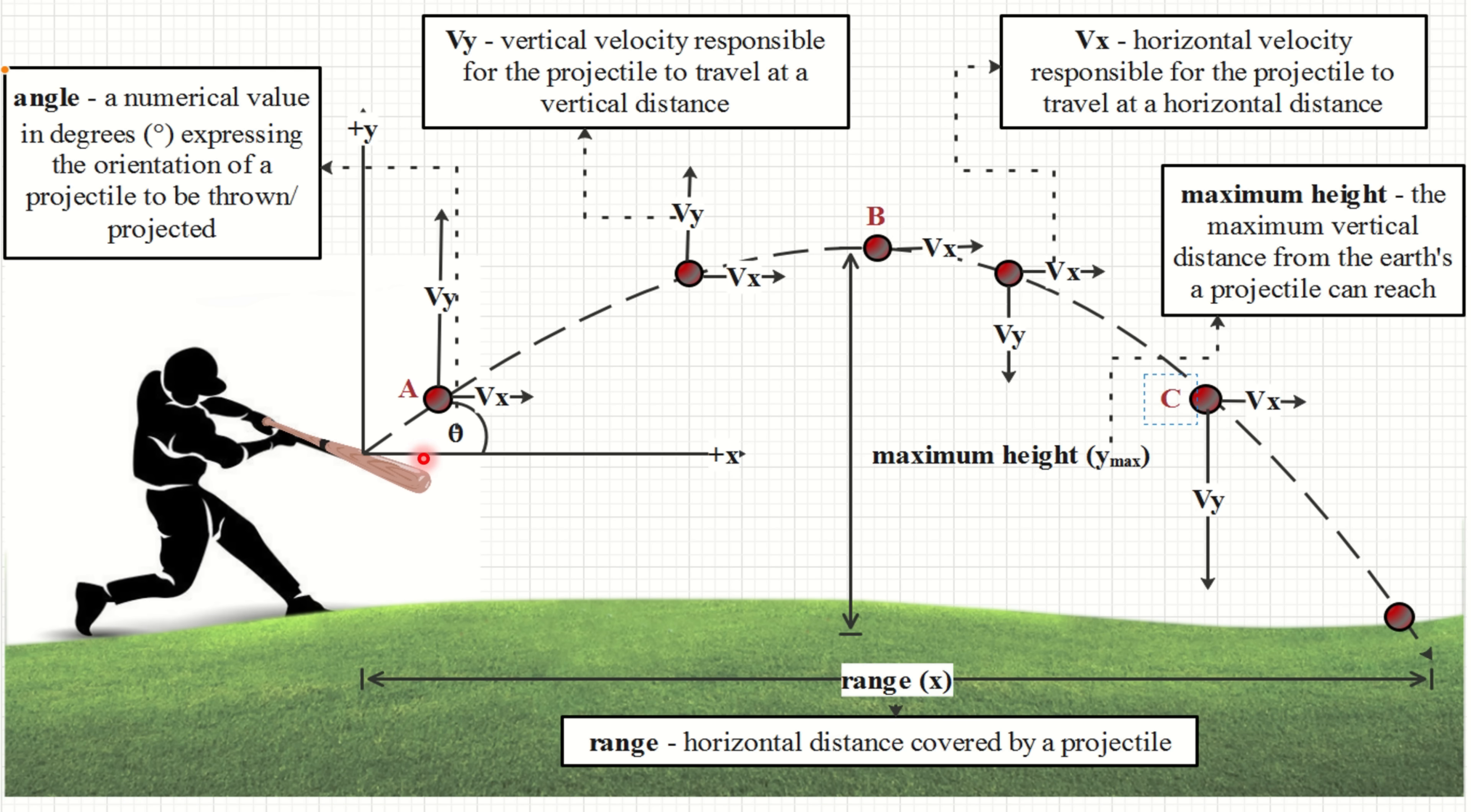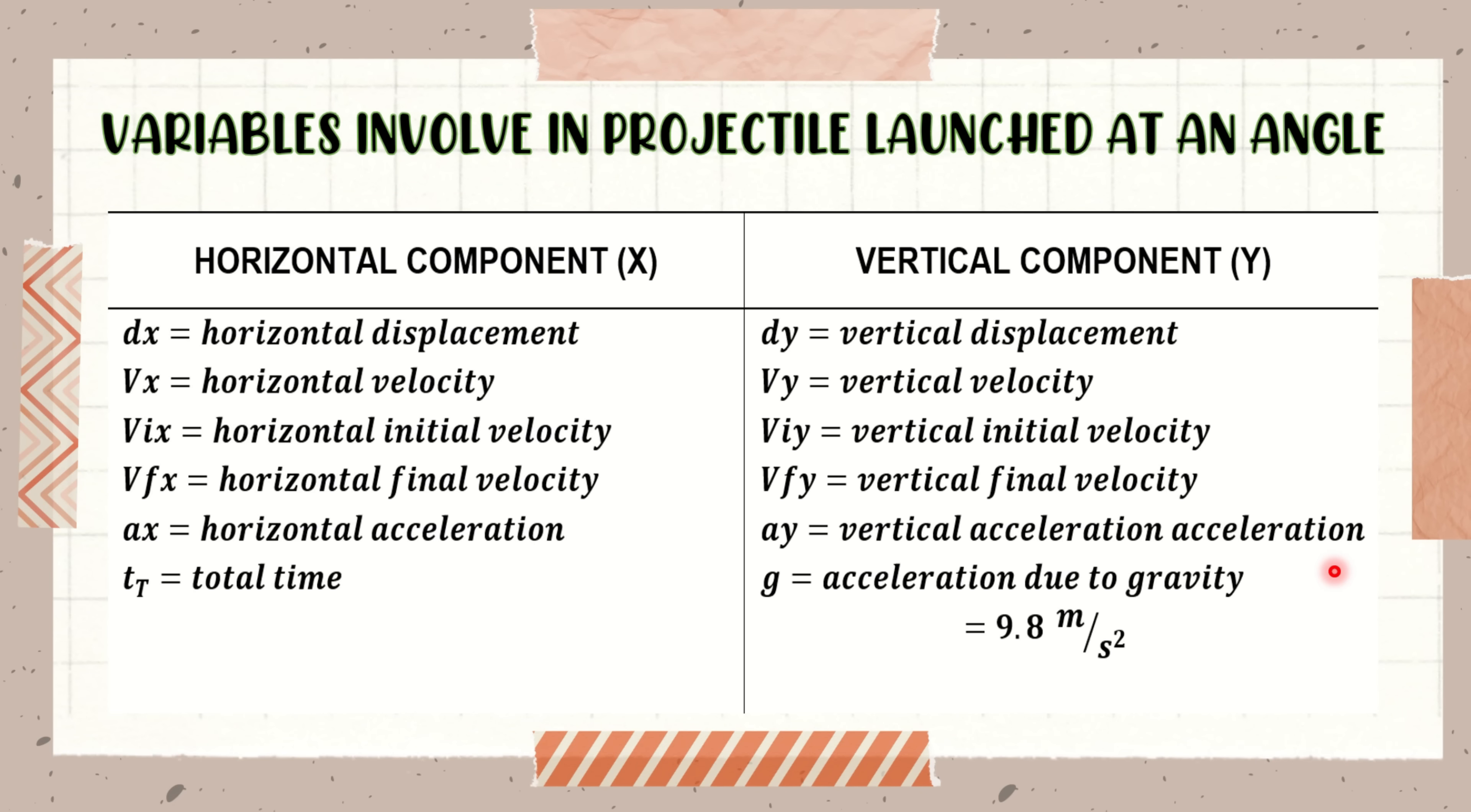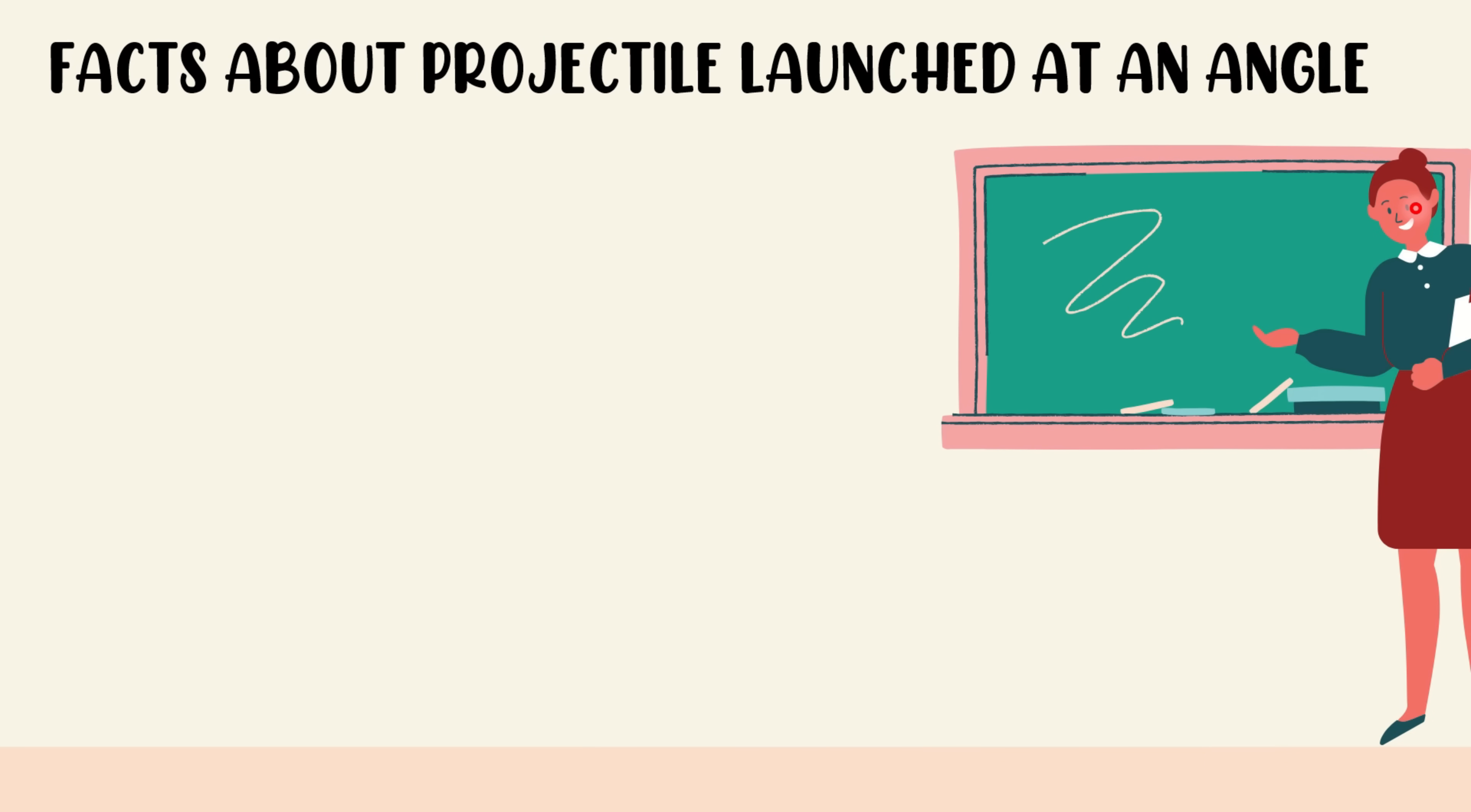So when the vertical velocity of the baseball as it rises to the air decreases due to the opposing direction of gravity towards the motion, when the baseball reaches the maximum height, it momentarily stops, causing the vertical velocity to be zero. When it reaches to the ground, its vertical velocity increases, since the direction of the baseball's motion is the same with gravity. Take note of that, class! Now, take a look at the variables involved in projectile launch at an angle. Next, we have the facts about projectile launch at an angle.